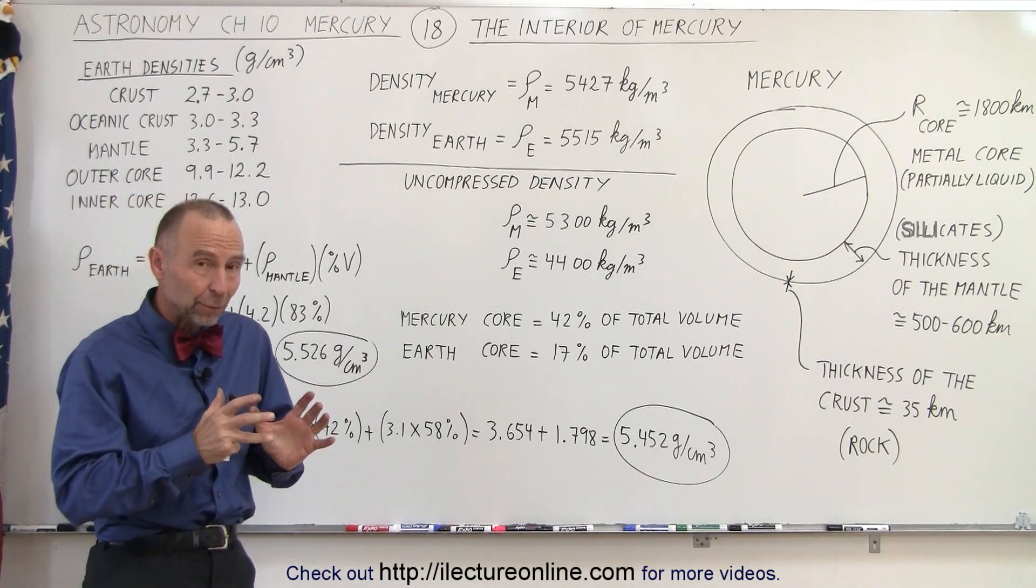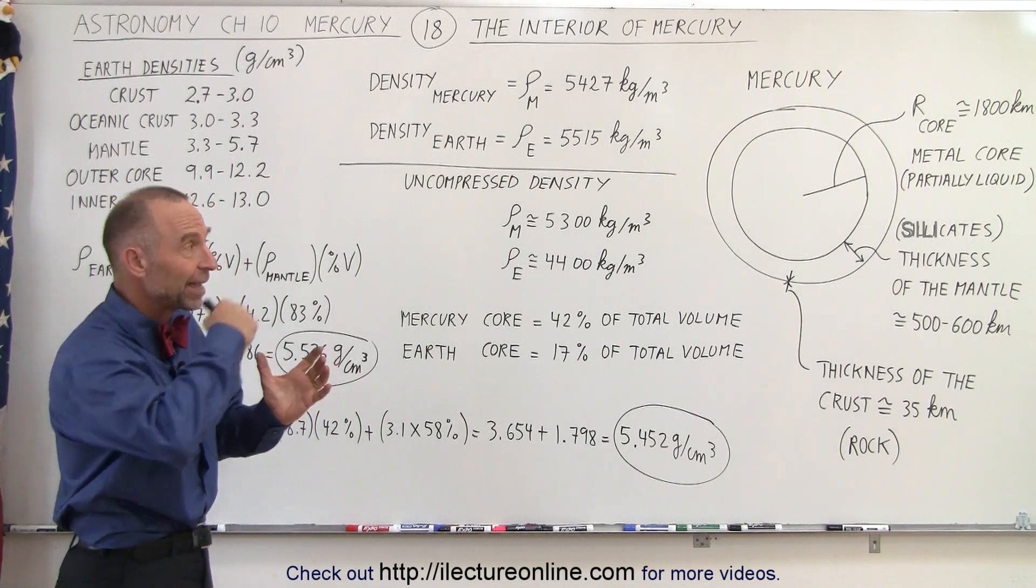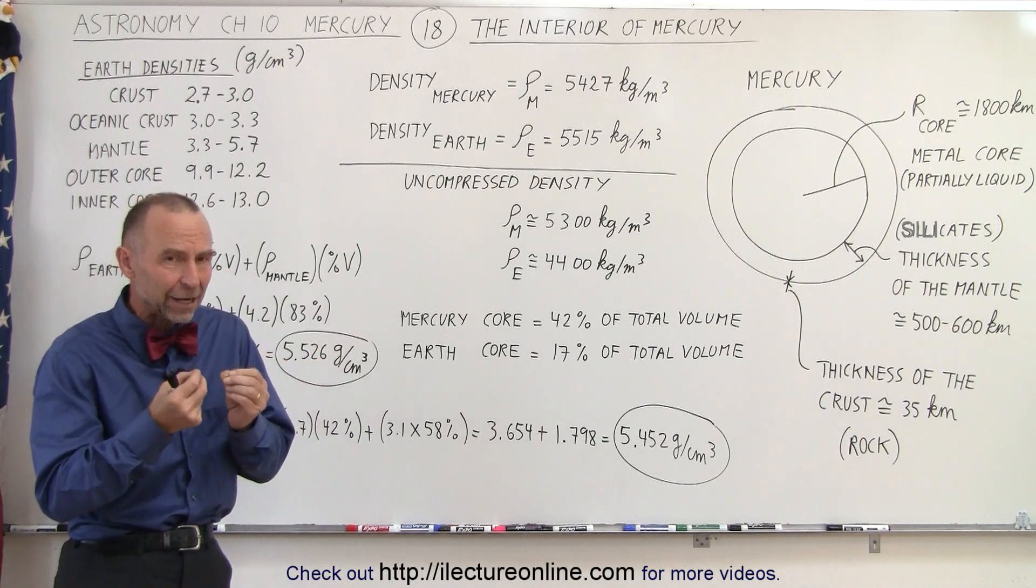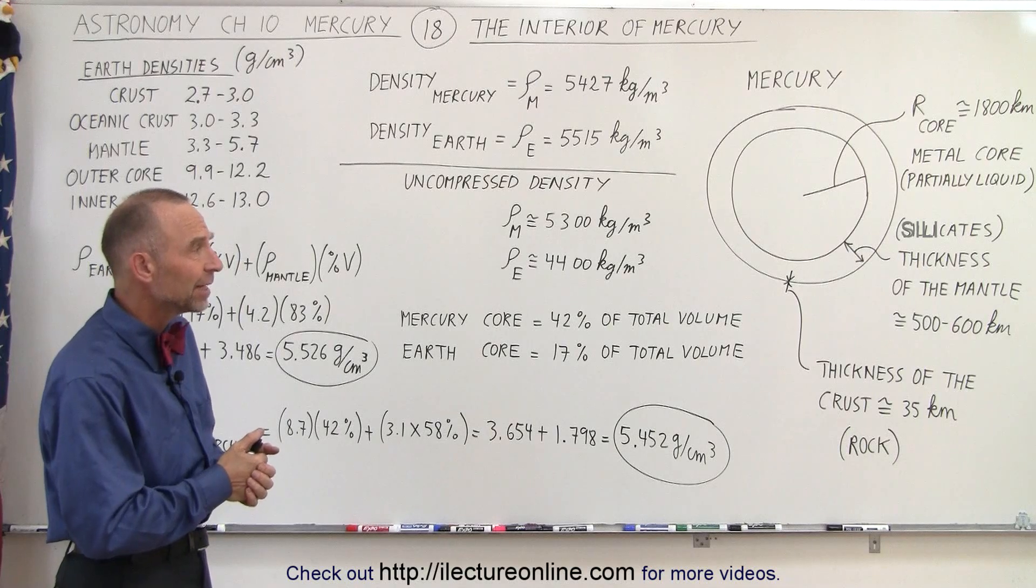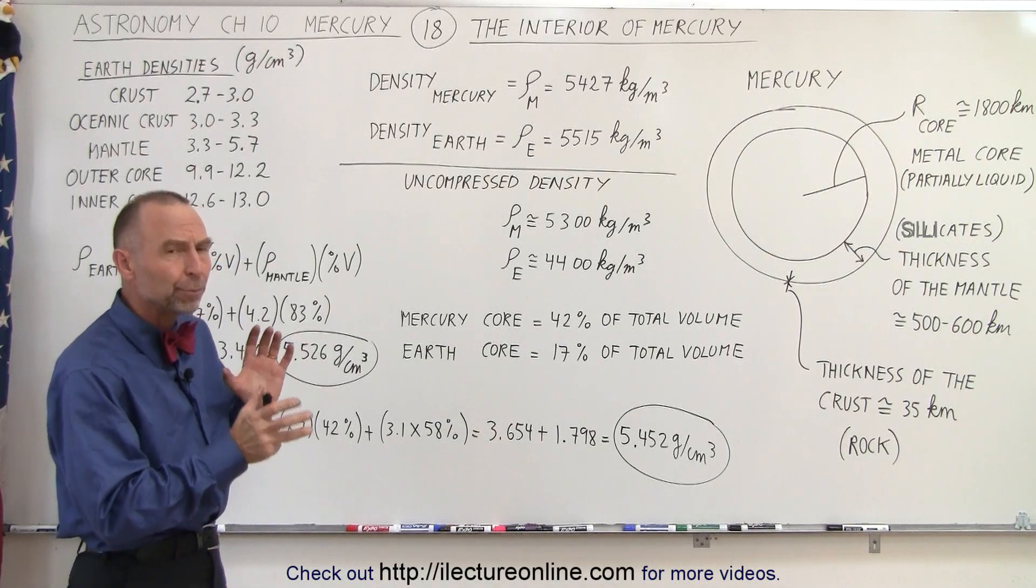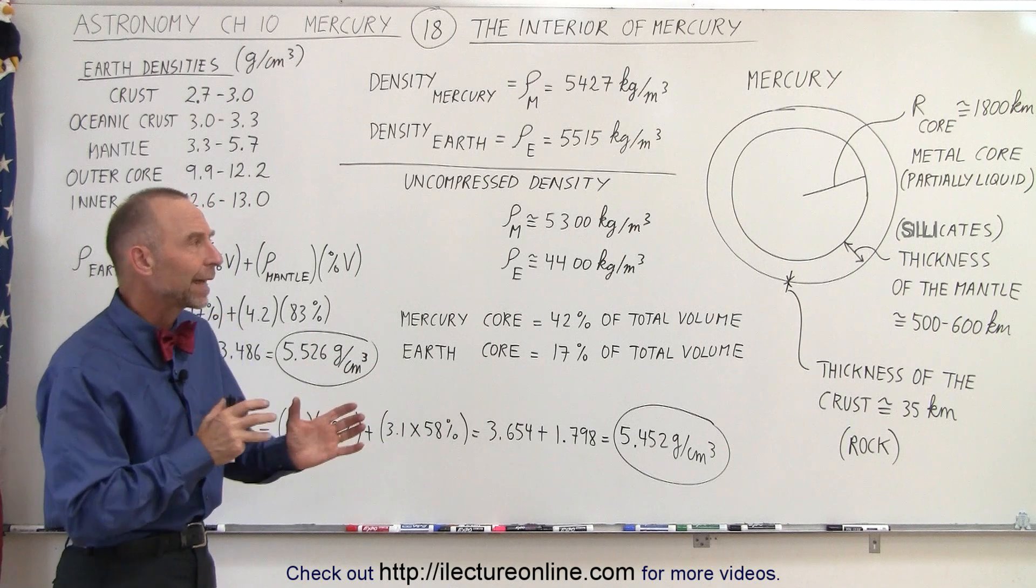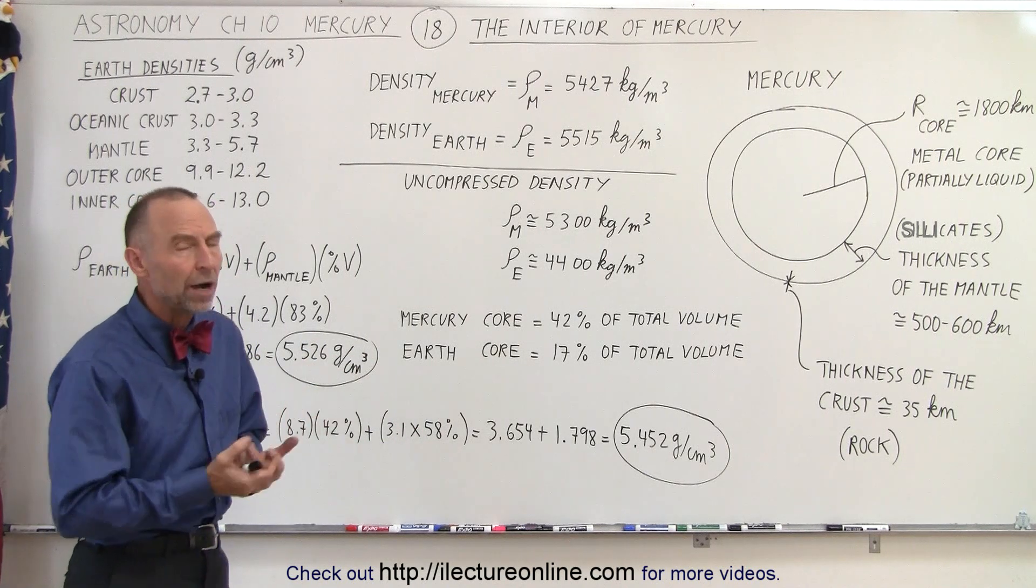We do know the size of the planet. We know the density. From flying around the planet, we can very accurately measure the mass of the planet and therefore calculate the density. But we don't know what proportion of the planet is metal and what proportion is mantle and rock.